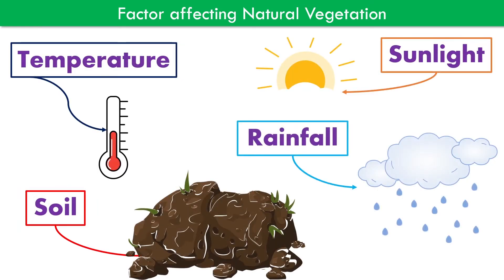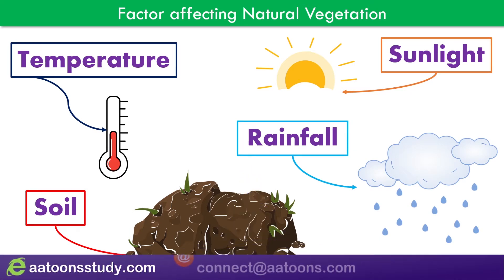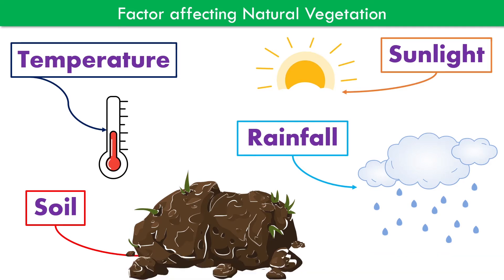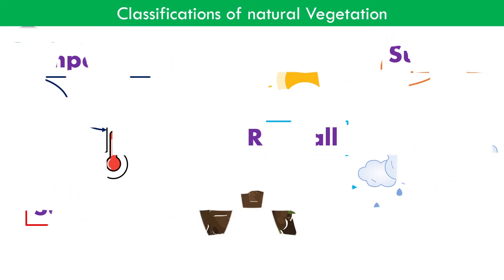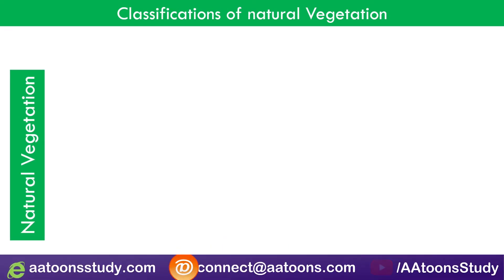Factors affecting natural vegetation are soil, sunlight, temperature, and rainfall. These factors are responsible for the growth of natural vegetation. Fertile soil, appropriate temperature, sunlight, and rainfall between 200 centimeters to 300 centimeters are appropriate to grow natural vegetation.